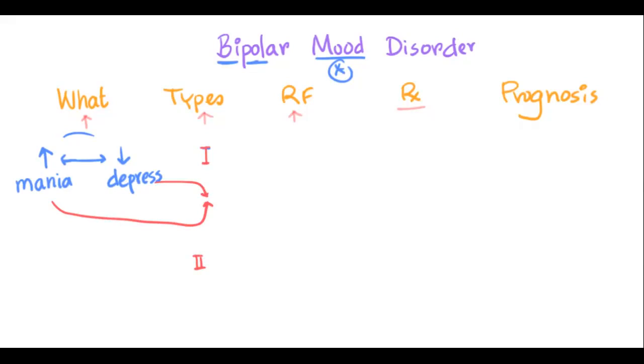In type 2 bipolar mood disorder, however, the patient does not have overt mania, rather has a subdued version, a milder version of mania known as hypomania.